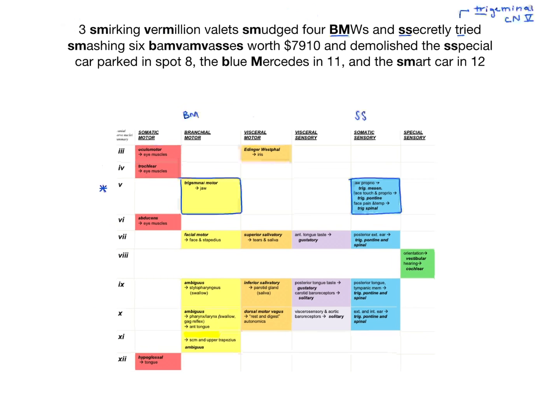BMWs and "secretly tried" — TRIED standing for the trigeminal nerve, cranial nerve 5 — which has two modalities: branchial motor, which is the trigeminal motor nucleus, and somatic sensory, which includes the trigeminal mesencephalic, trigeminal pontine, and trigeminal spinal nuclei.